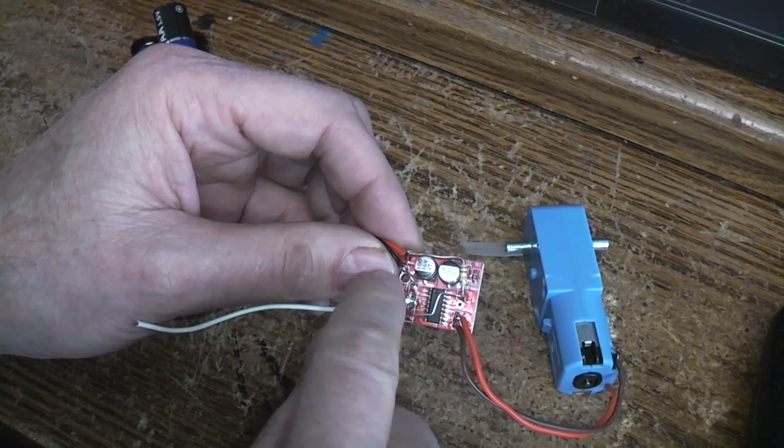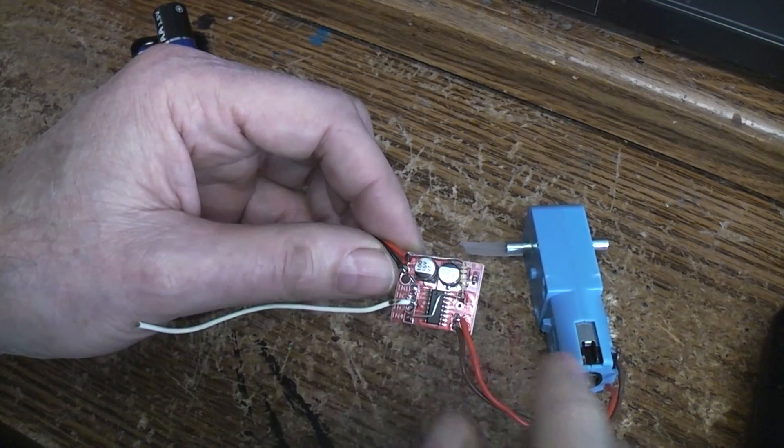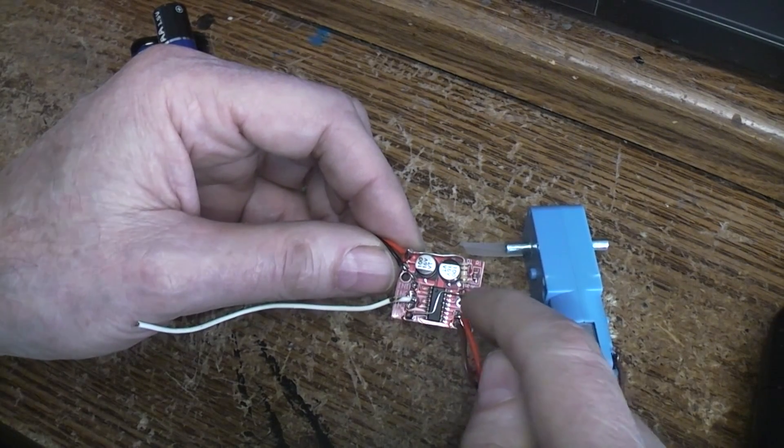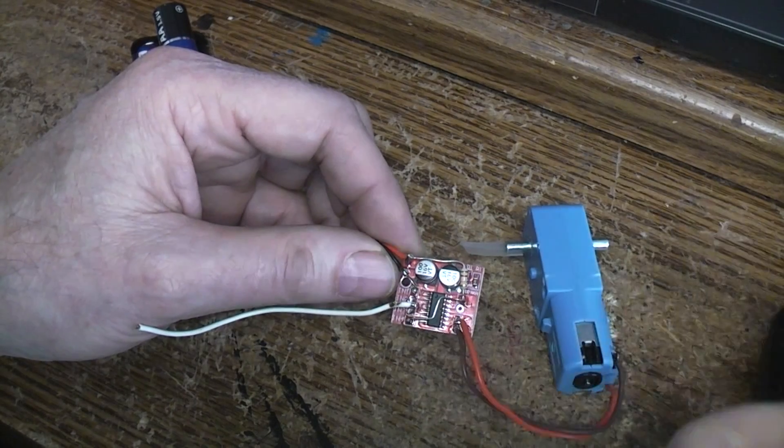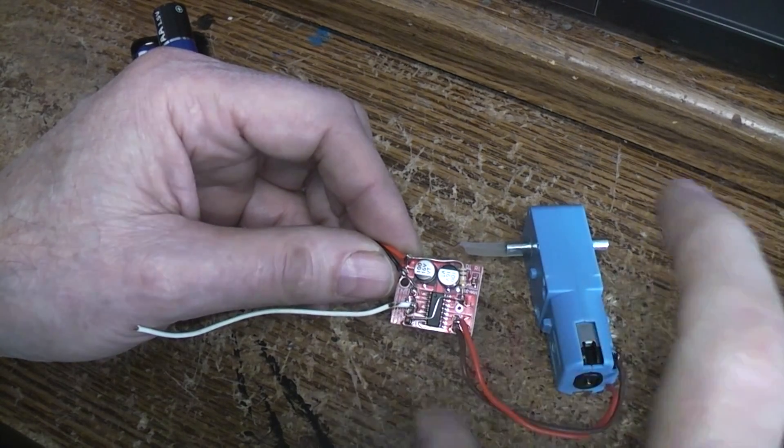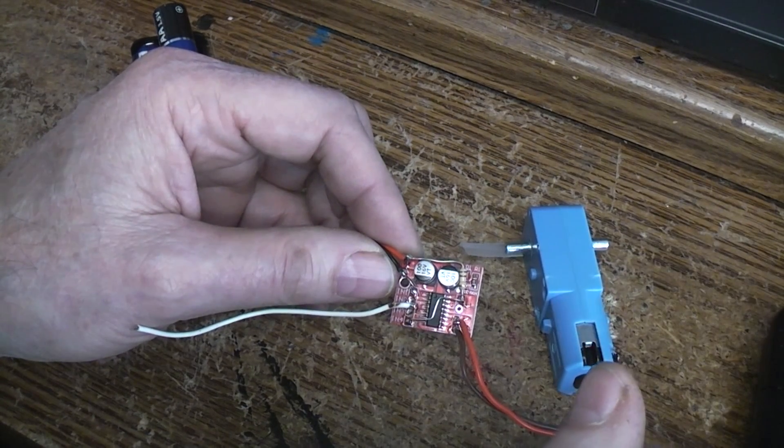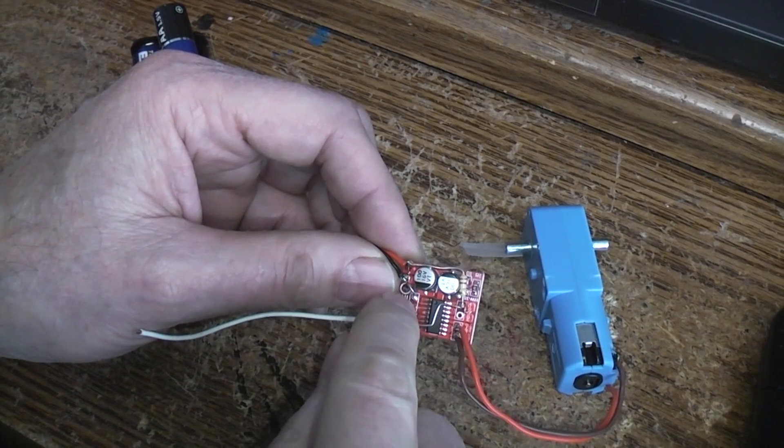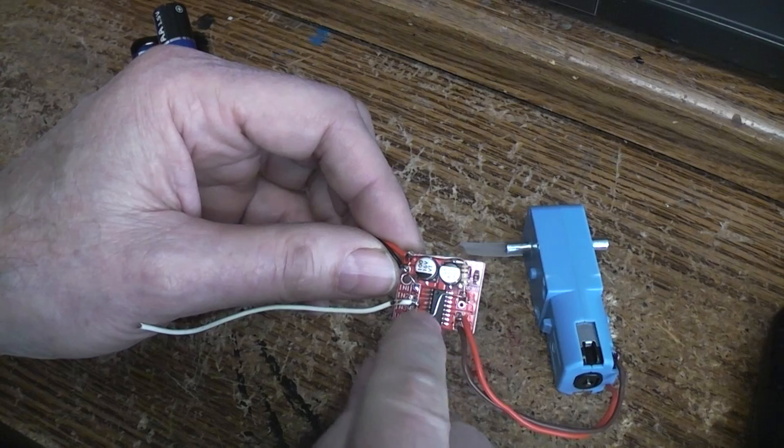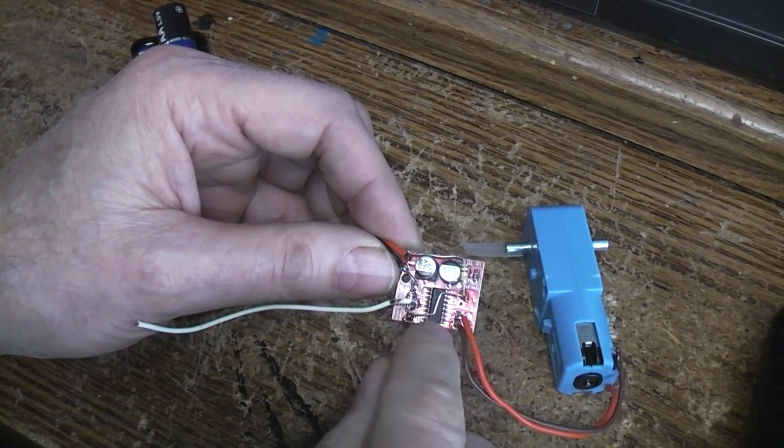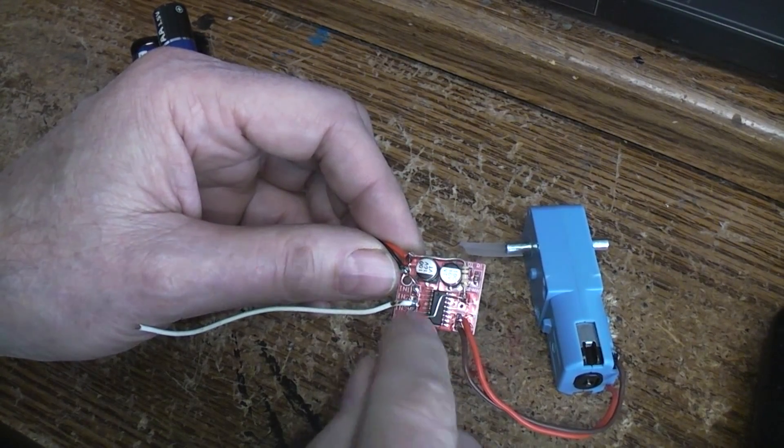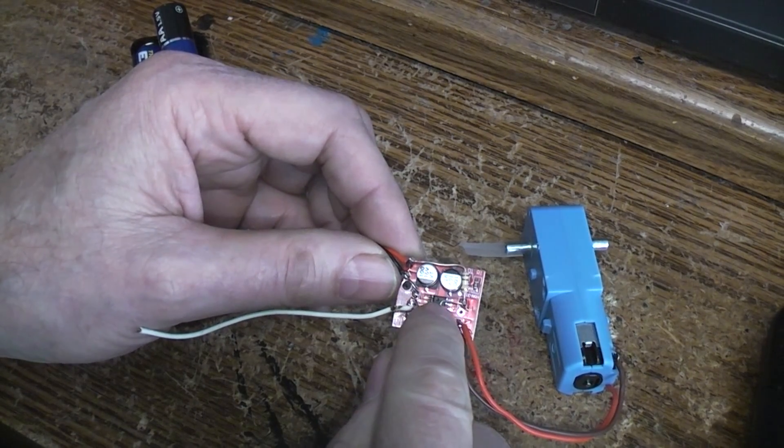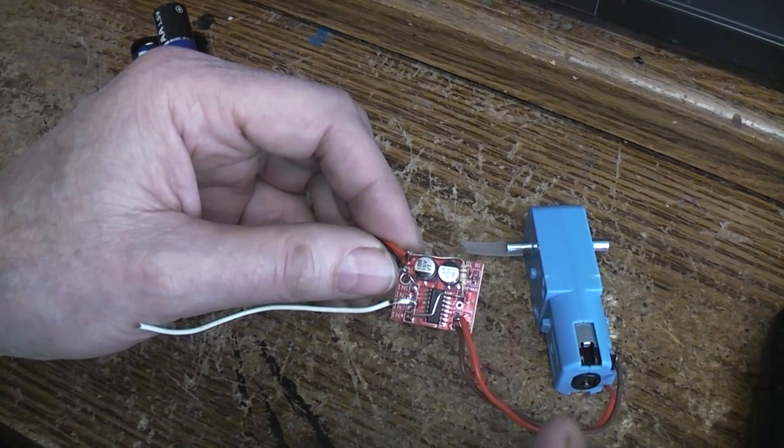But if you make both control lines high, that's considered a brake state. And in that state, it makes both of the motor driver output pins go low. So if a motor was trying to back feed into the circuit, it's going to lock it up and work like a brake. But more importantly, if you make both control lines low, or in the case of this particular chip, the MX1616H, that's the tri-state position and the outputs are in what they call Z, which is open.